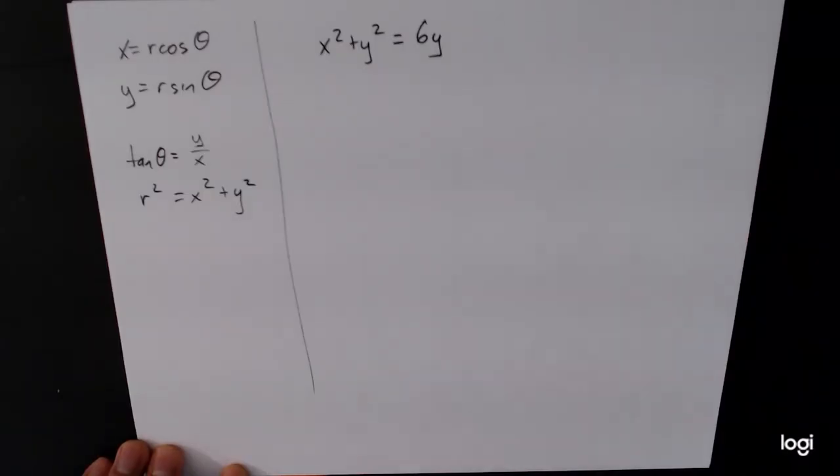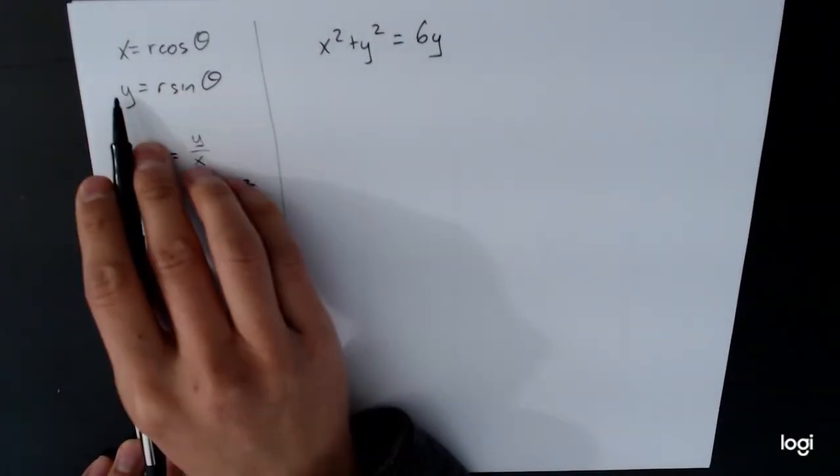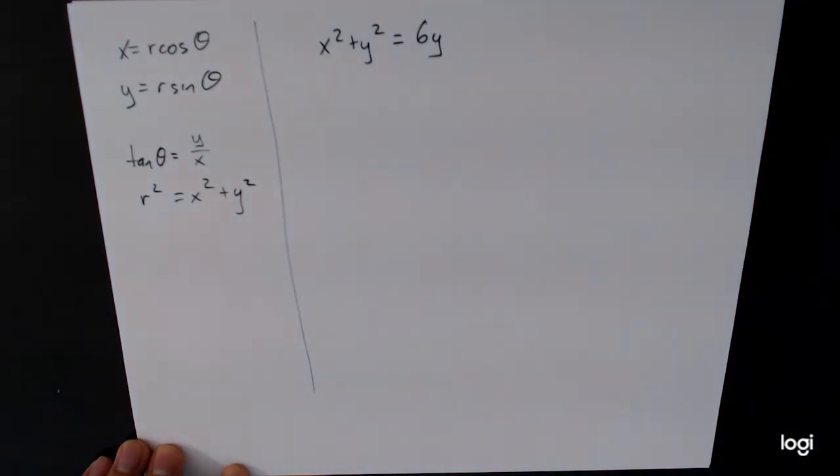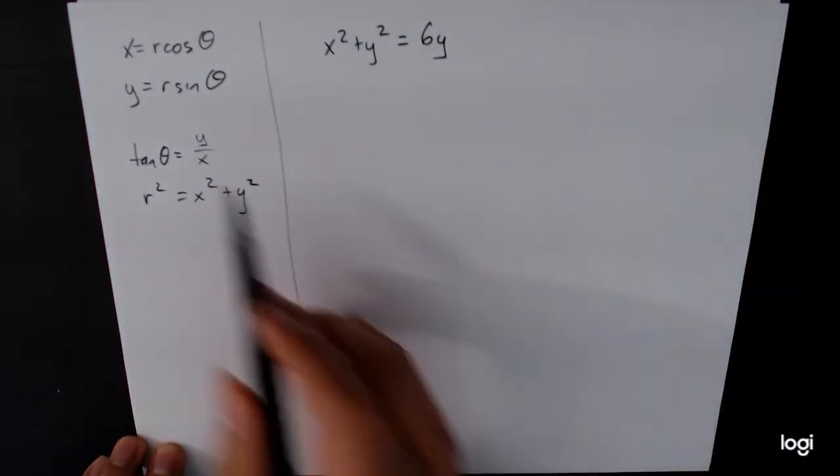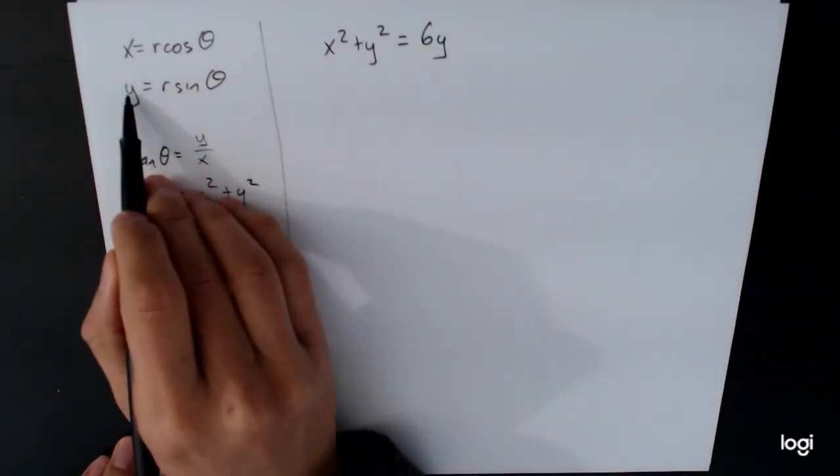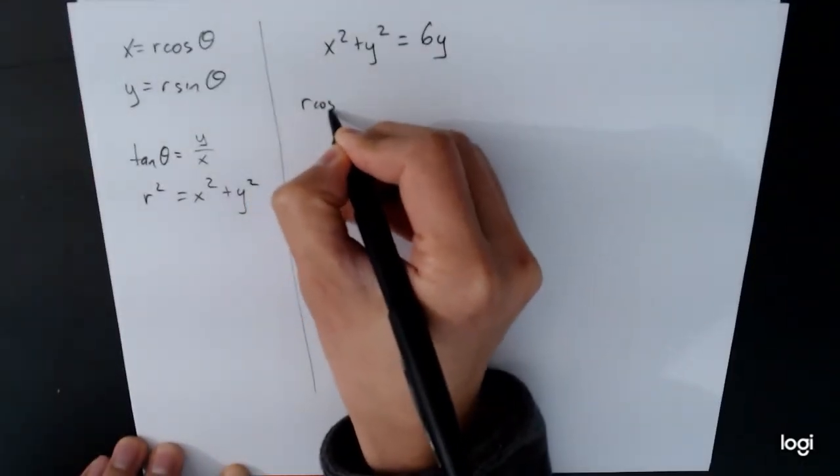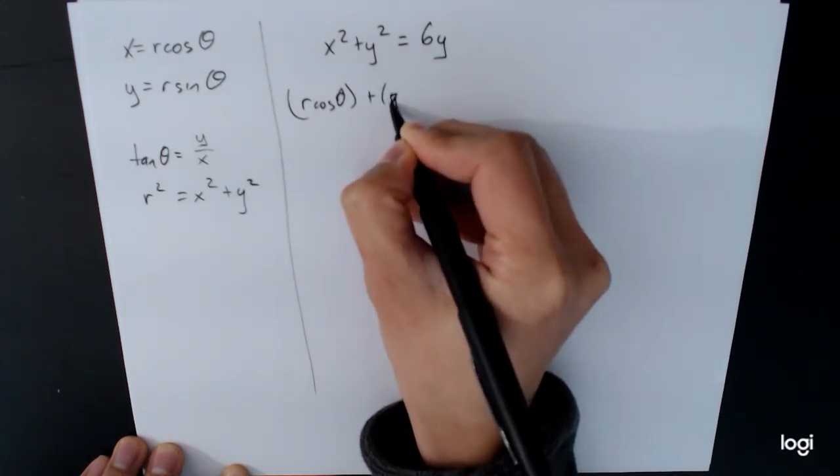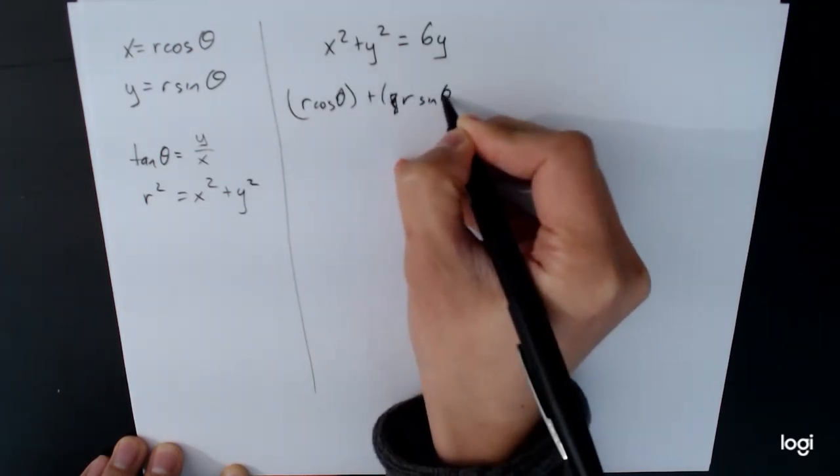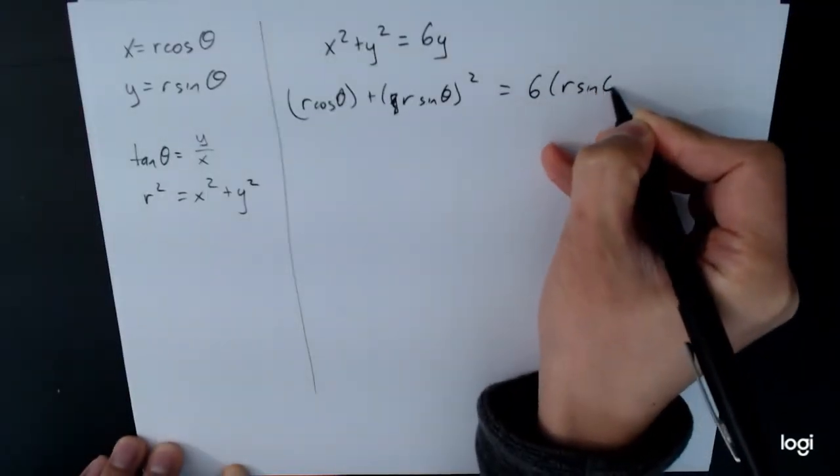So what we're going to do with this is we have these formulas. We have these formulas over here that we just plug into. So we're going to take our things that are given right now in rectangular and turn them into polar. So r cosine theta squared plus r sine theta squared is equal to 6 times r sine theta.